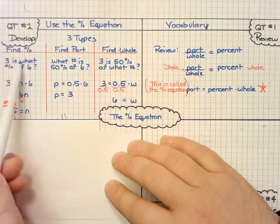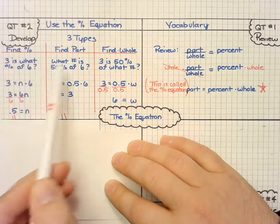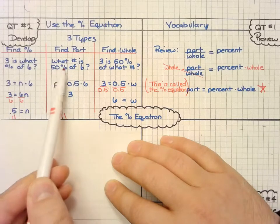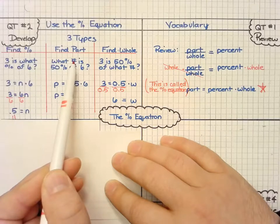So again, we have three is what percent of six, so we don't know what the percent is. What number is 50%? Well, 50% is not the whole thing, so that number is not the whole thing. So that's our part, P.